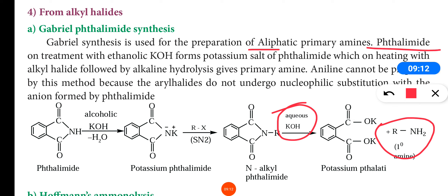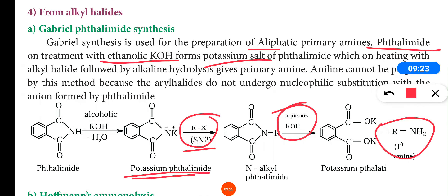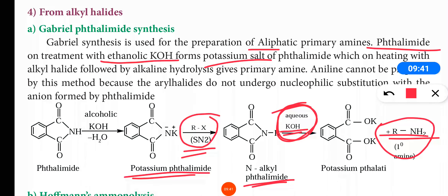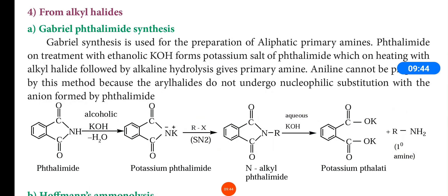When phthalimide is treated with alcoholic KOH it forms potassium salt. When the potassium salt is heated with alkyl halide, an SN2 bimolecular nucleophilic substitution reaction occurs and forms N-alkyl phthalimide. When N-alkyl phthalimide undergoes hydrolysis by aqueous KOH, it forms a primary amine. This is Gabriel phthalimide synthesis.